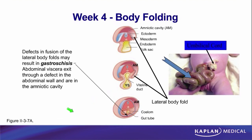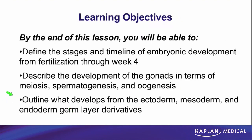We've now completed the first four weeks of development. In week one: fertilization through implantation. Week two: the two-layered embryo. Week three: gastrulation to give us the three-layered embryo. Week four: body folding. We talked about how the gonads form and give us gametes through spermatogenesis and oogenesis, and we've talked about the formation of the three basic germ layers — ectoderm, mesoderm, and endoderm — plus notochord, and what adult cell types are derived from each.